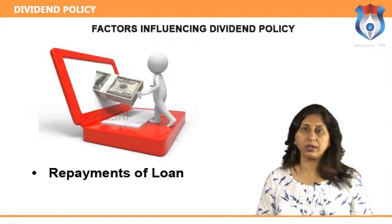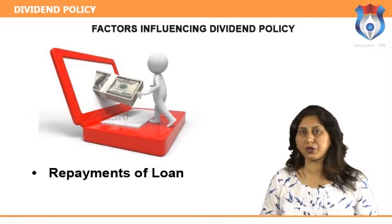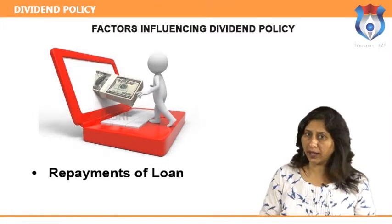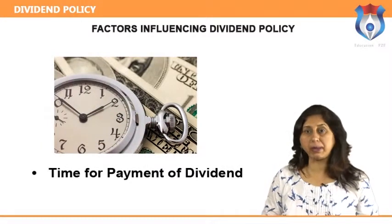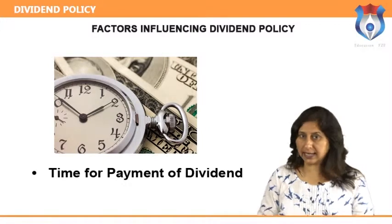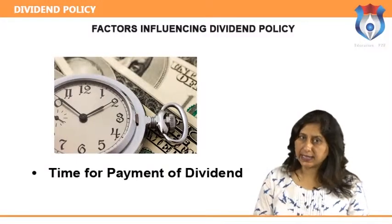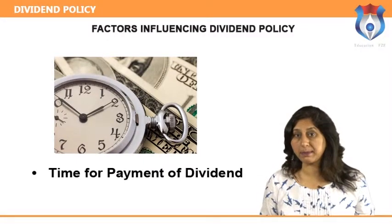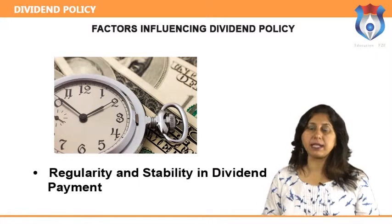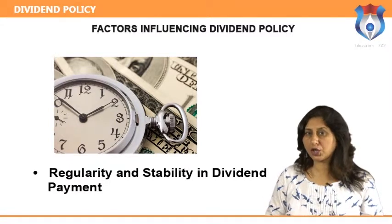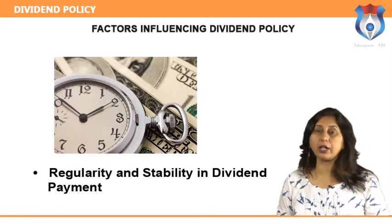Further factors include: repayment of loans — a company with loan indebtedness is committed to high retention of earnings unless other arrangements are made for debt redemption at maturity; time for payment of dividend — it is desirable to distribute dividends at a time when cash is least needed by the company, considering peak and lean periods of expenditure; and regularity and stability in dividend payment — dividends should be paid regularly as each investor is interested in regular dividend payments.